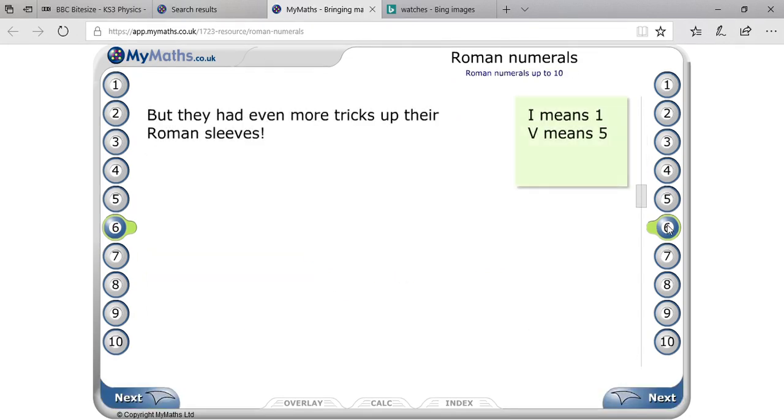Here you can see that, just before I explained that I means 1, V means 5. But they had even more tricks up their Roman sleeves.